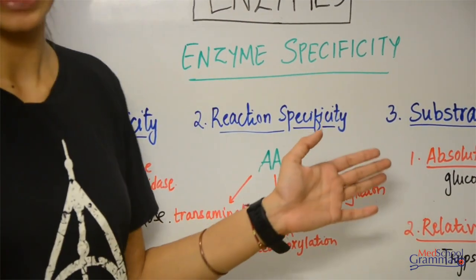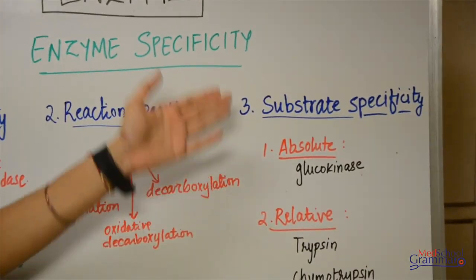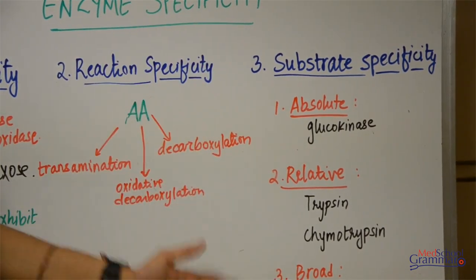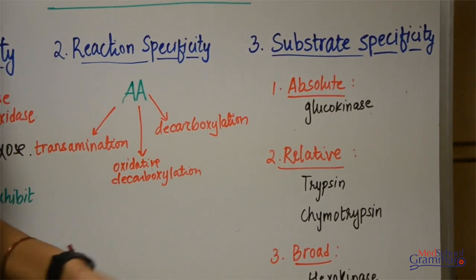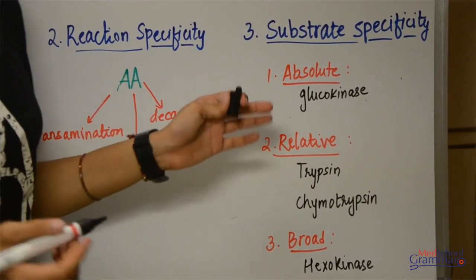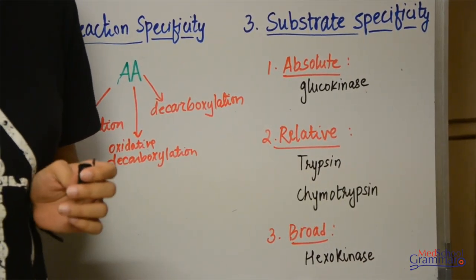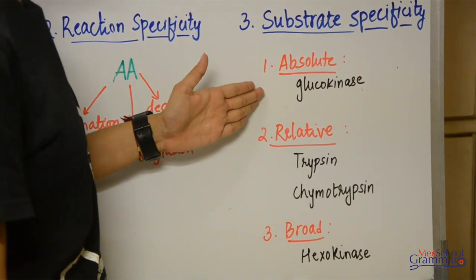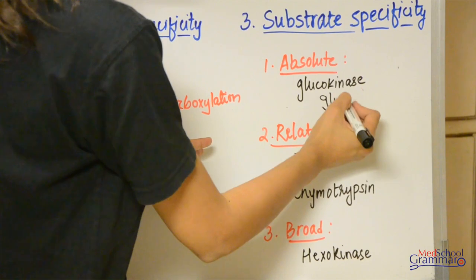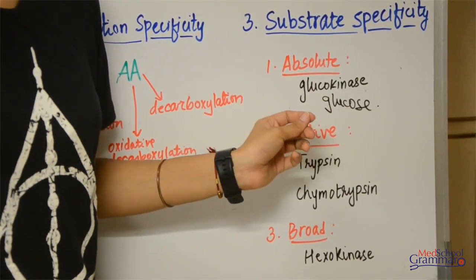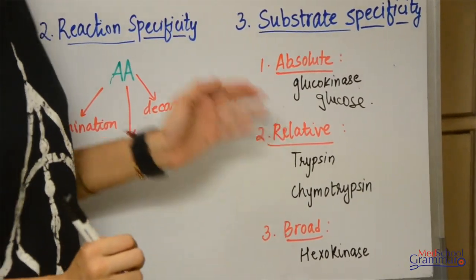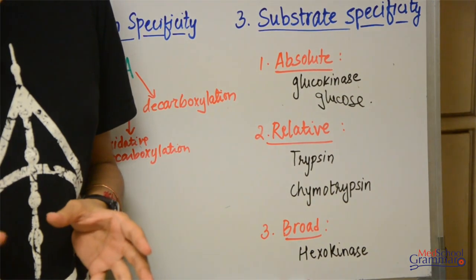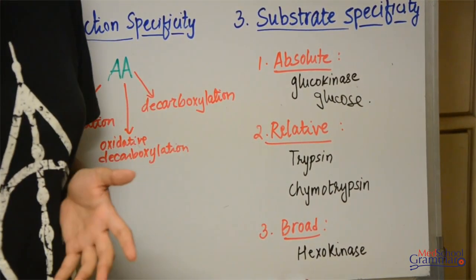That is the meaning of reaction specificity. Let's move on to substrate specificity. Substrate specificity means that the enzyme is specific about what substrate it is binding with. This is divided into three different types: absolute, relative, and broad. Absolute means that an enzyme reacts with only one particular substrate. For example, glucokinase reacts or acts on only glucose to form glucose-6-phosphate. We then have relative substrate specificity, which means that the enzyme acts on a particular group — it is specific to the group present in the substrate rather than the entire substrate as a whole, so it's also called group specificity.